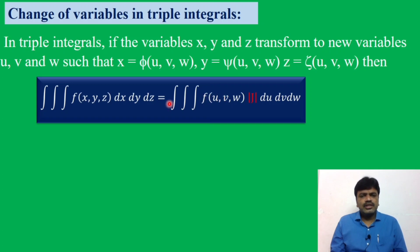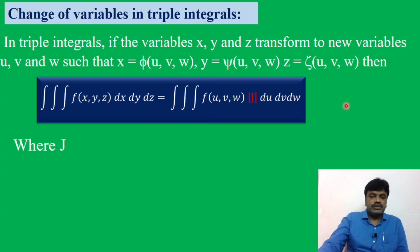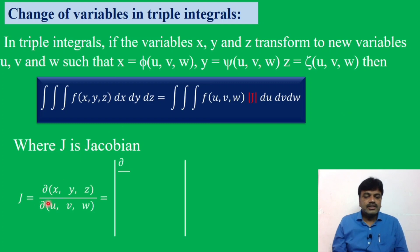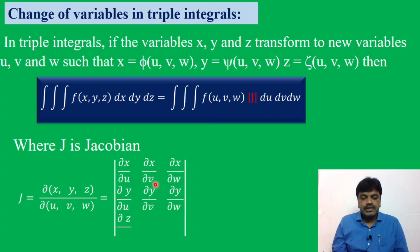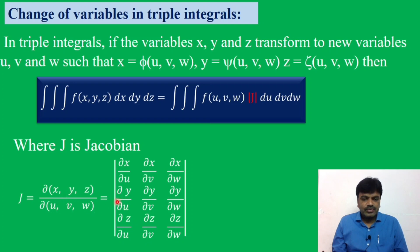The extra term here is also |J|. For triple integrals, the Jacobian of x, y, z with respect to u, v, w is defined as J = ∂(x,y,z)/∂(u,v,w), which is the 3×3 determinant: first row ∂x/∂u, ∂x/∂v, ∂x/∂w; second row ∂y/∂u, ∂y/∂v, ∂y/∂w; third row ∂z/∂u, ∂z/∂v, ∂z/∂w.